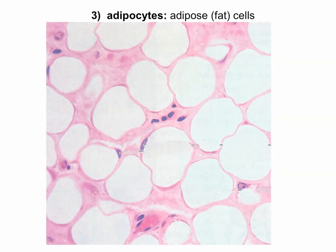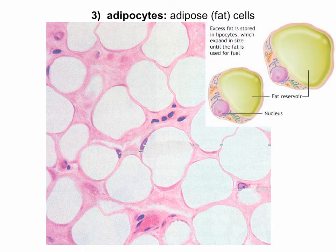Adipocytes are adipose or fat cells. If you look closely at them, the white part almost looks like a lumen, but it's actually a vacuole or vesicle inside the cell that is filled with fat droplets. This vacuole pushes all of the cytoplasm and organelles over to the sides. So the white space you see is not a lumen but a vacuole contained within the cell.